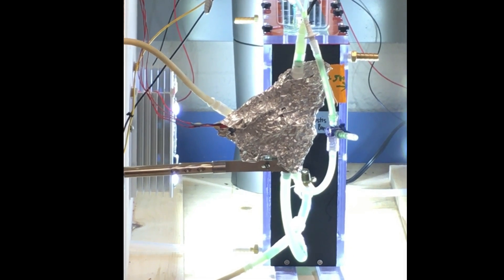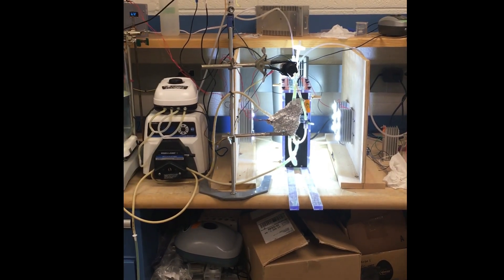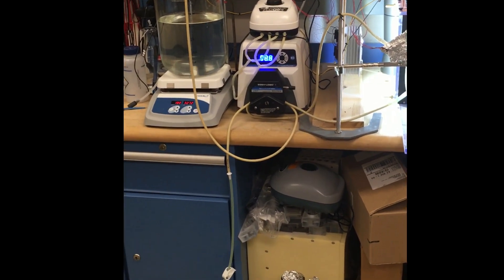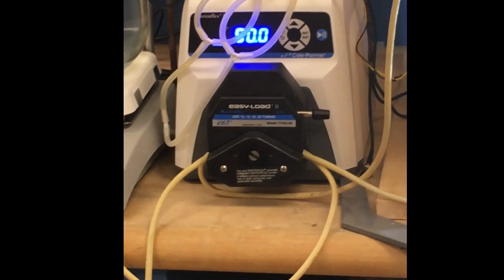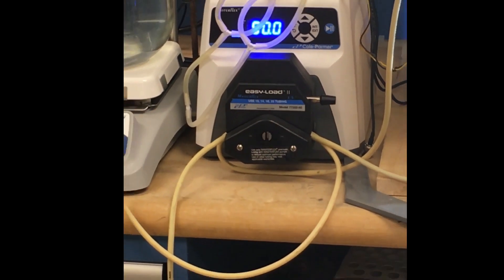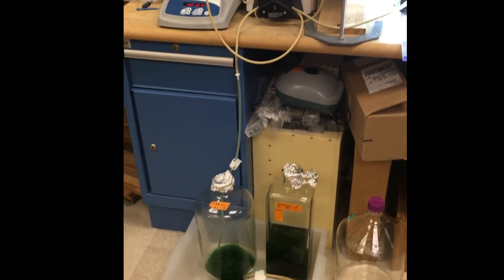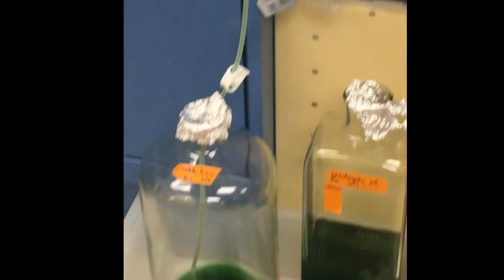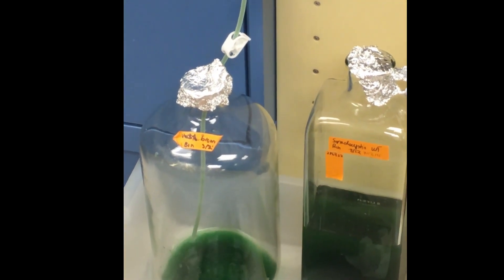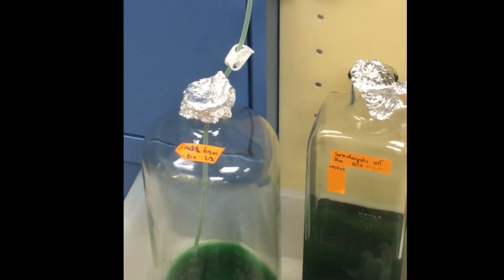In this setup, I have a turbidity sensor from a washing machine, in this case covered in aluminum foil, and the analog signal was transferred to an Arduino box. That Arduino box depends on the set value of a potentiometer and will turn on and off the pump to extract and add media to the reactor. And that is how the biomass density controls.